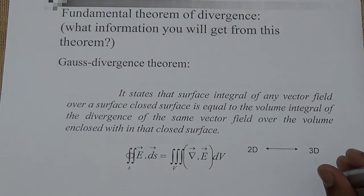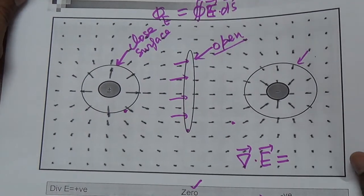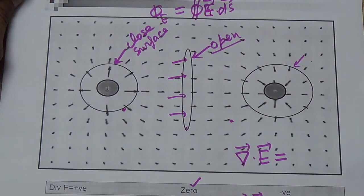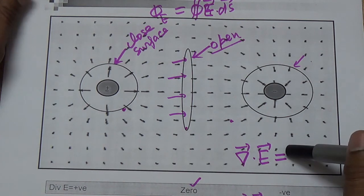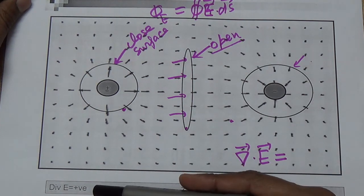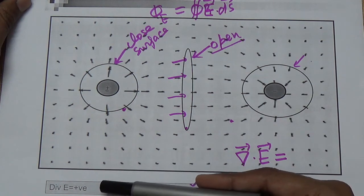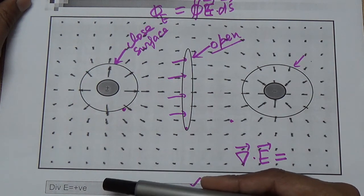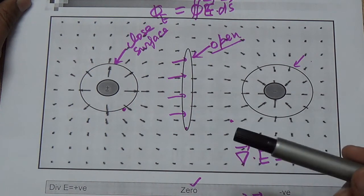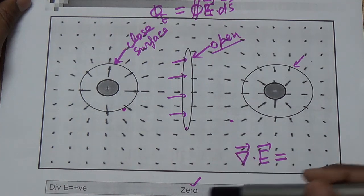After that, we discussed about the divergence. If we take the divergence of any vector field, what we get as a result is a scalar — that means magnitude only — and the magnitude could be zero, positive, or negative.